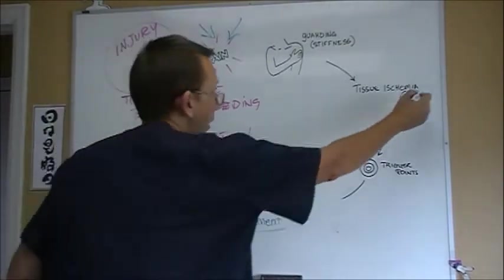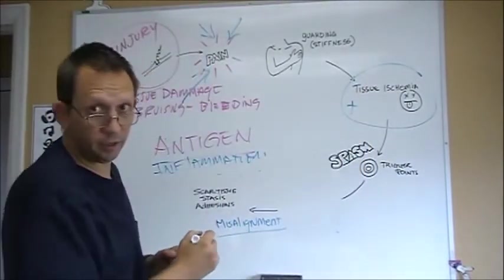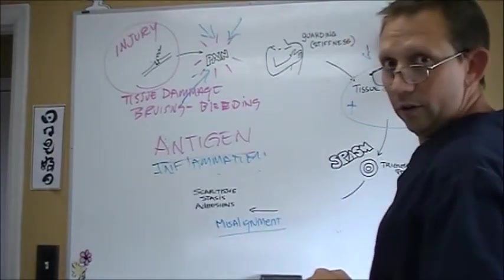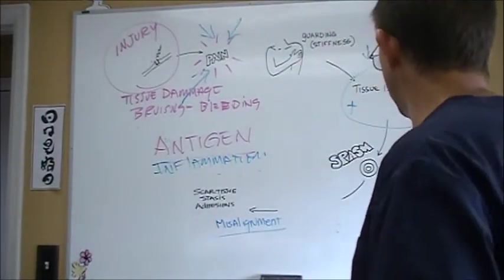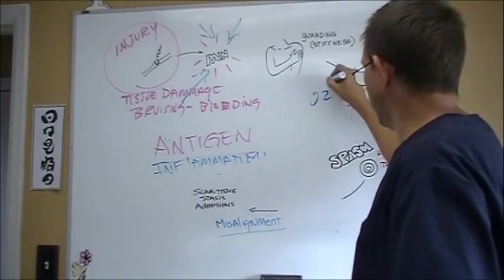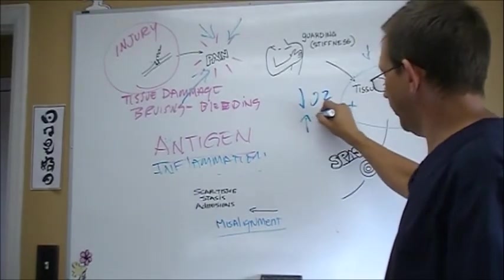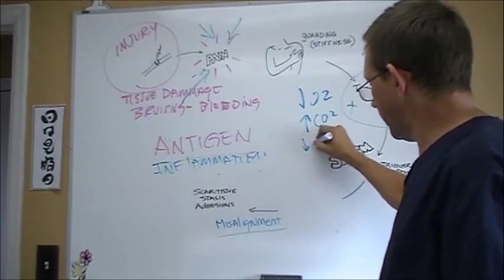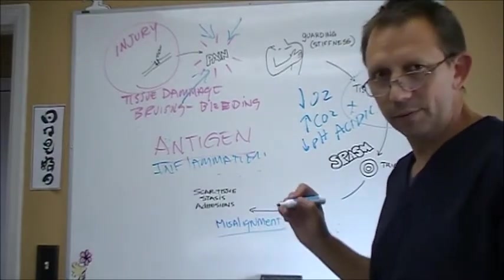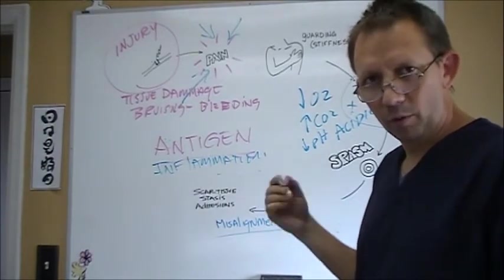Guarding and stiffness. So you hold it. You don't want to move it as much. That causes more tissue ischemia. Tissue ischemia, remember, that's just a decrease in oxygen. This is O2 over here. There's a decrease in O2, an increase of CO2, therefore a decrease in pH. So you become more acidic. We don't like to be acidic.